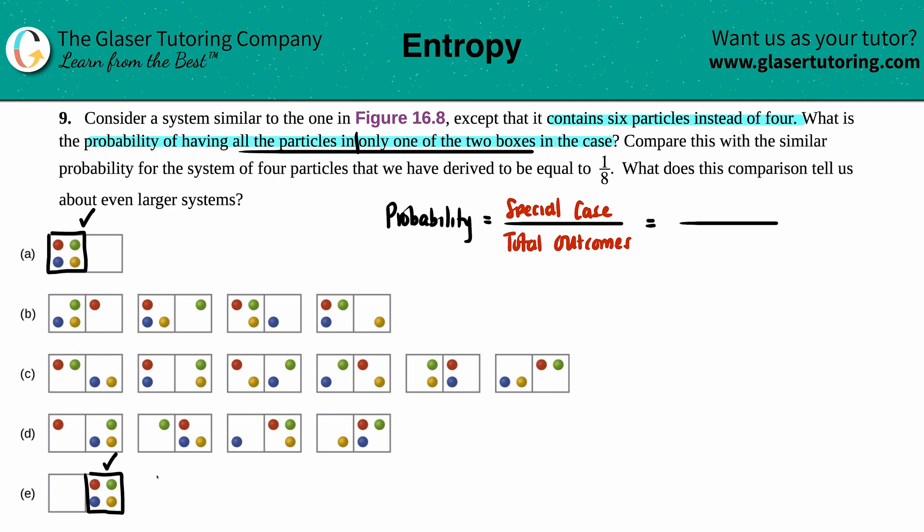So that checks out. Now for all the other microstates, we don't have that—those balls are divvied up between the two boxes.